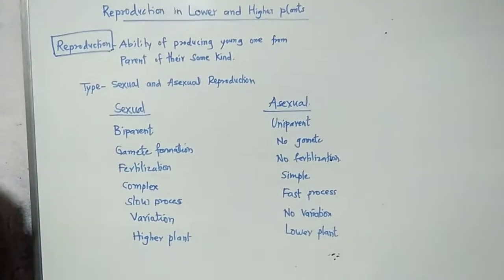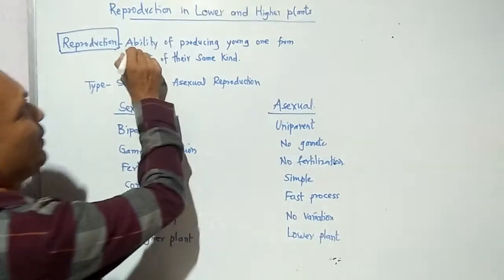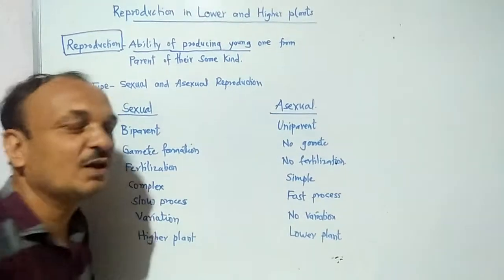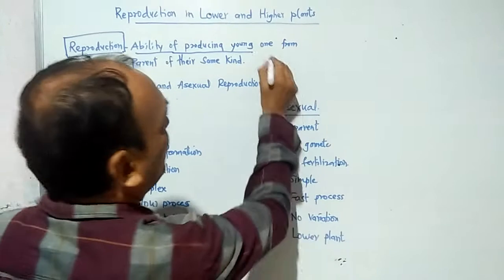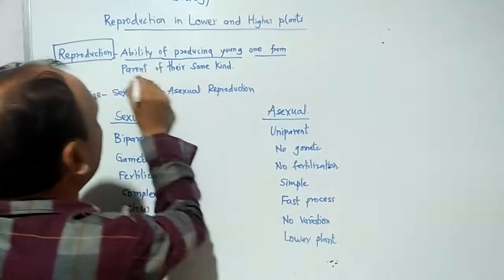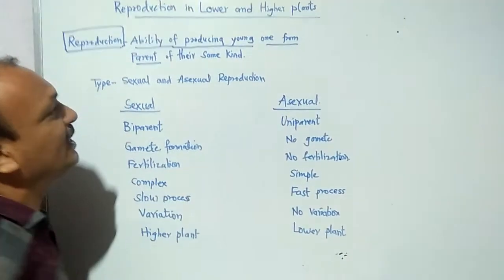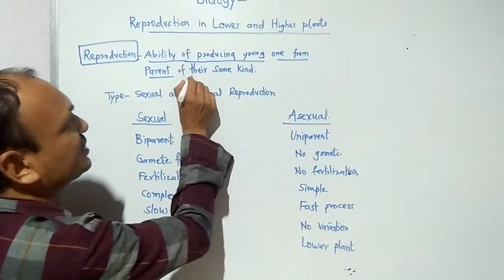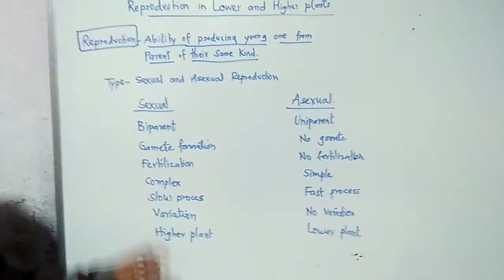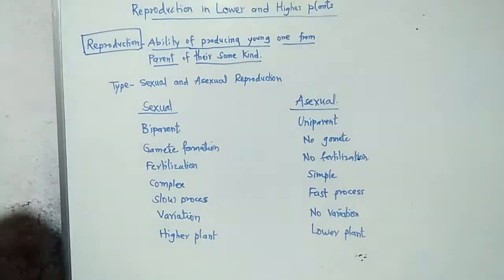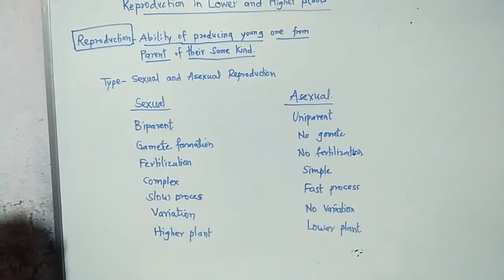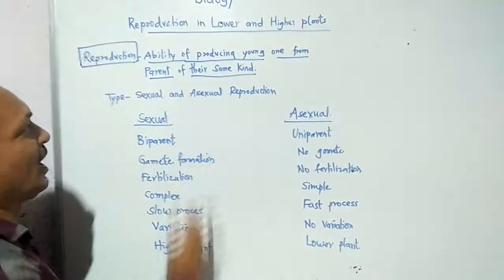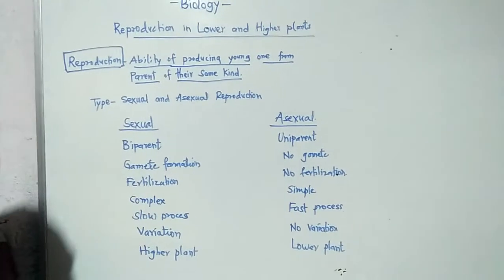Reproduction is the ability of producing a young one from their parents, and the young ones are similar to their parents. That is the exact definition of reproduction — ability of producing a young one from their parent of the same kind.